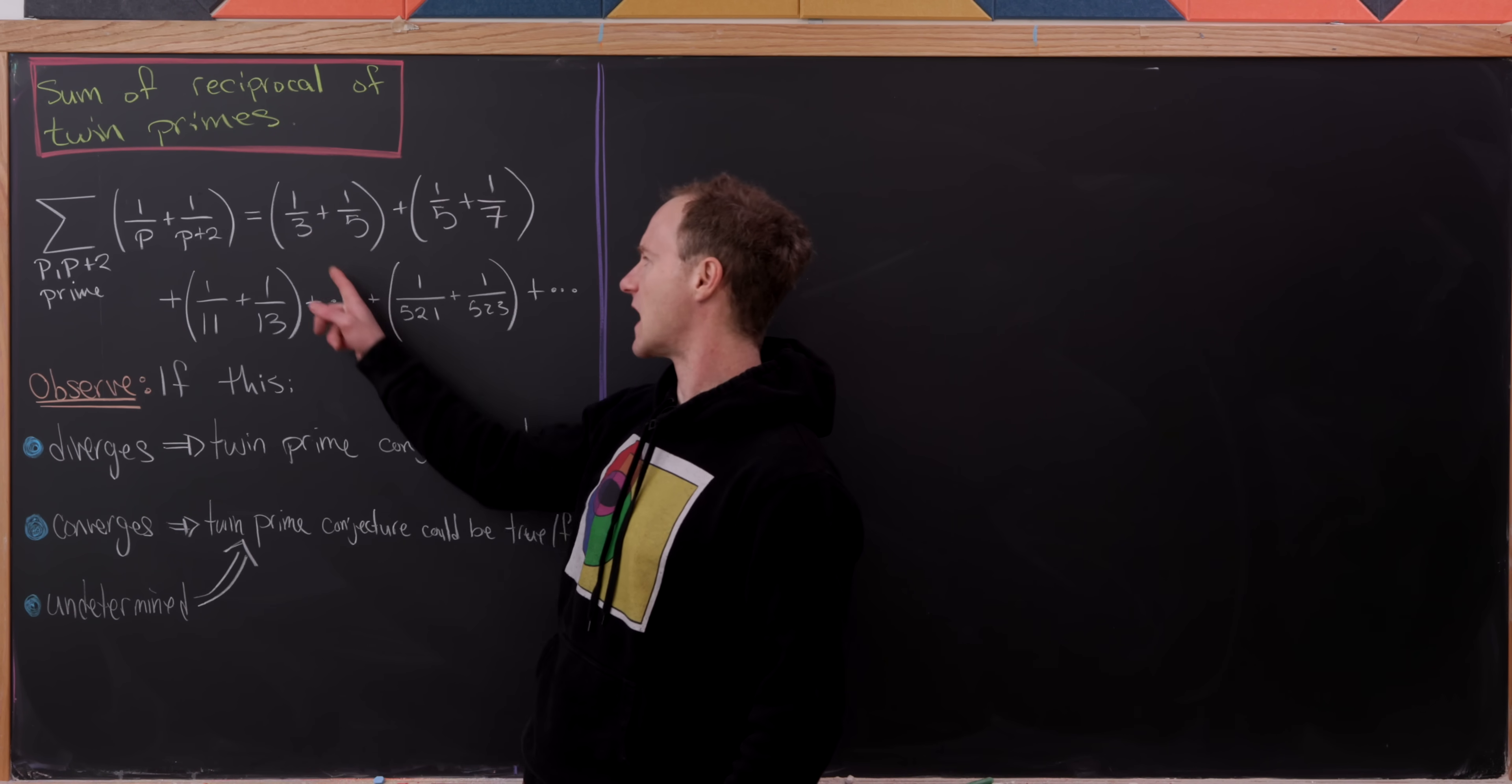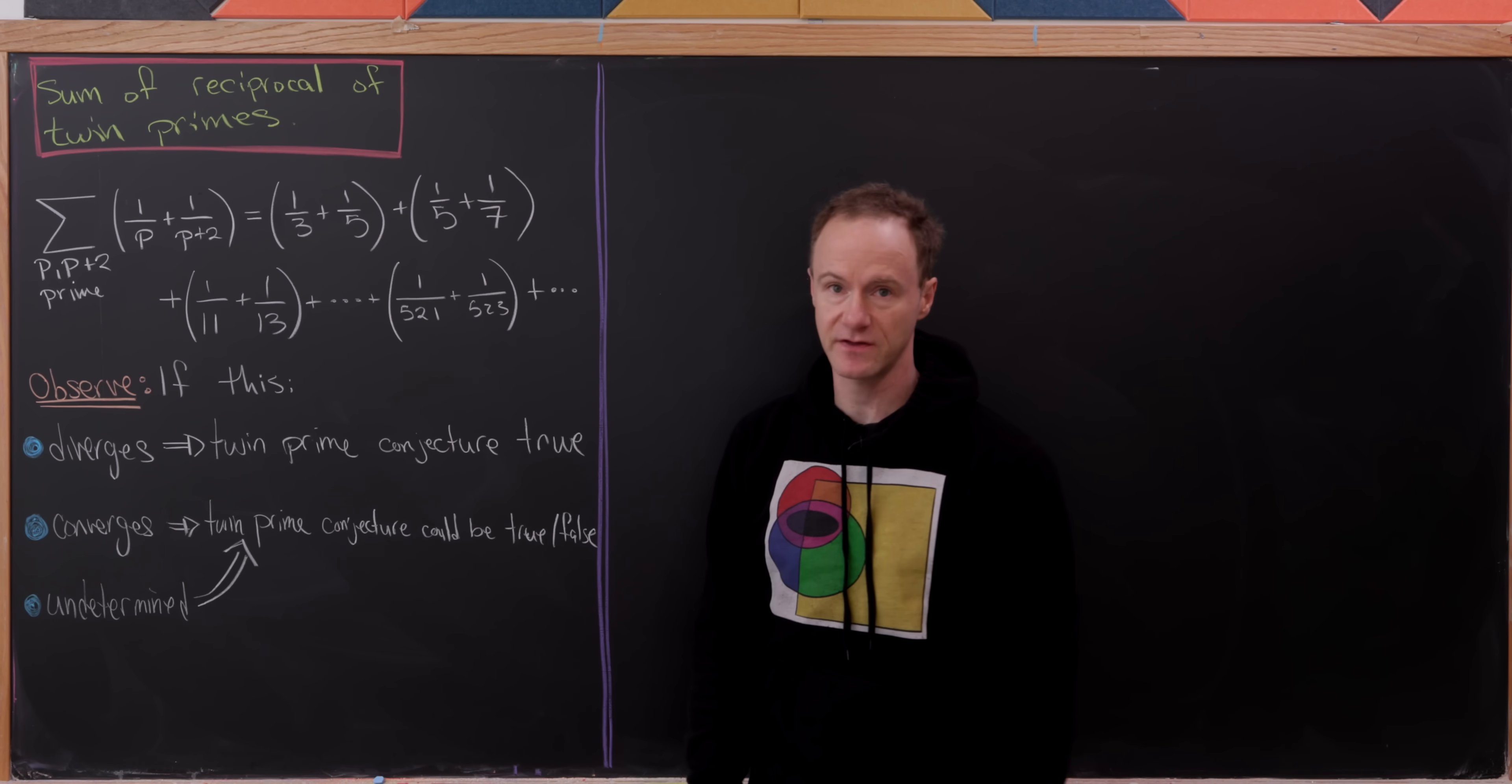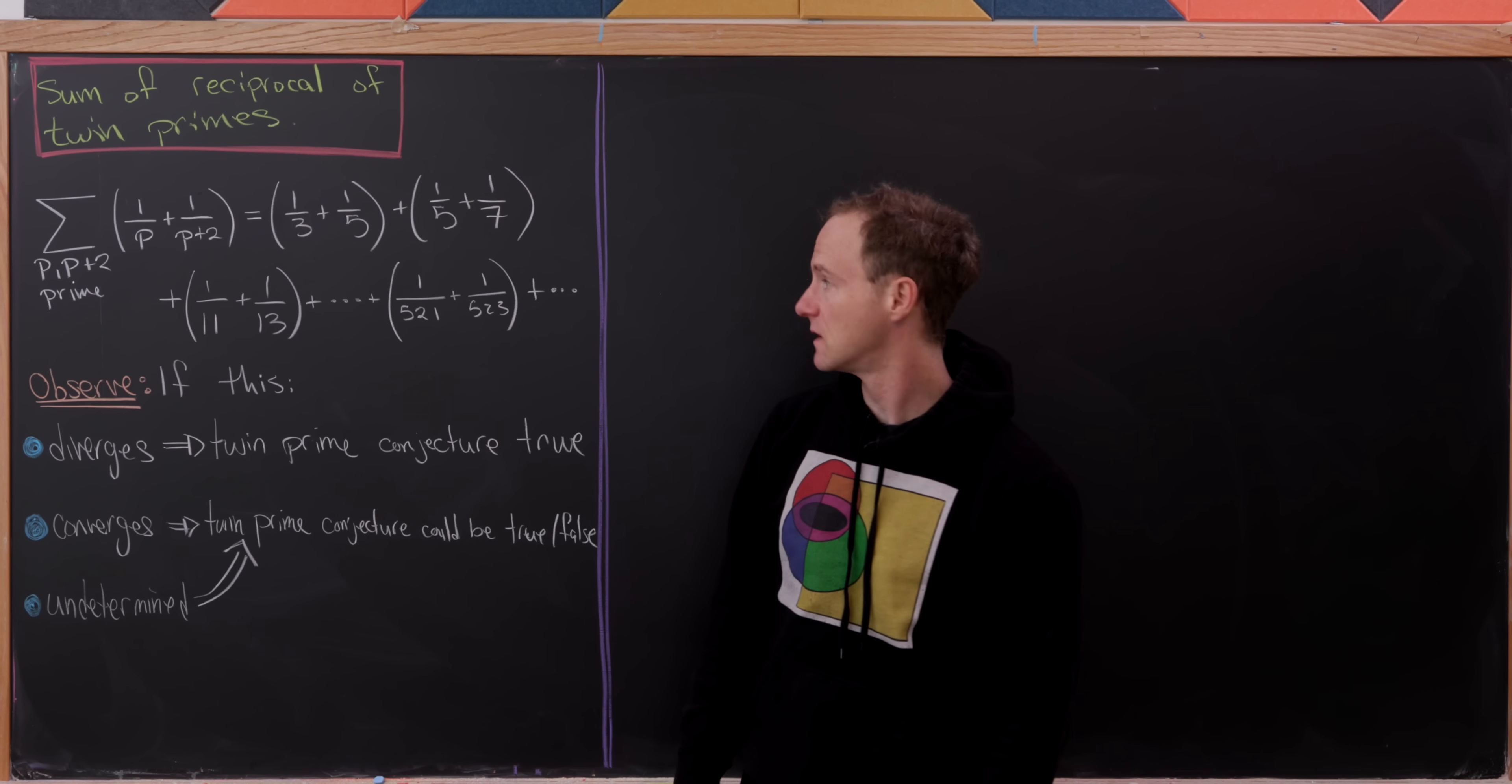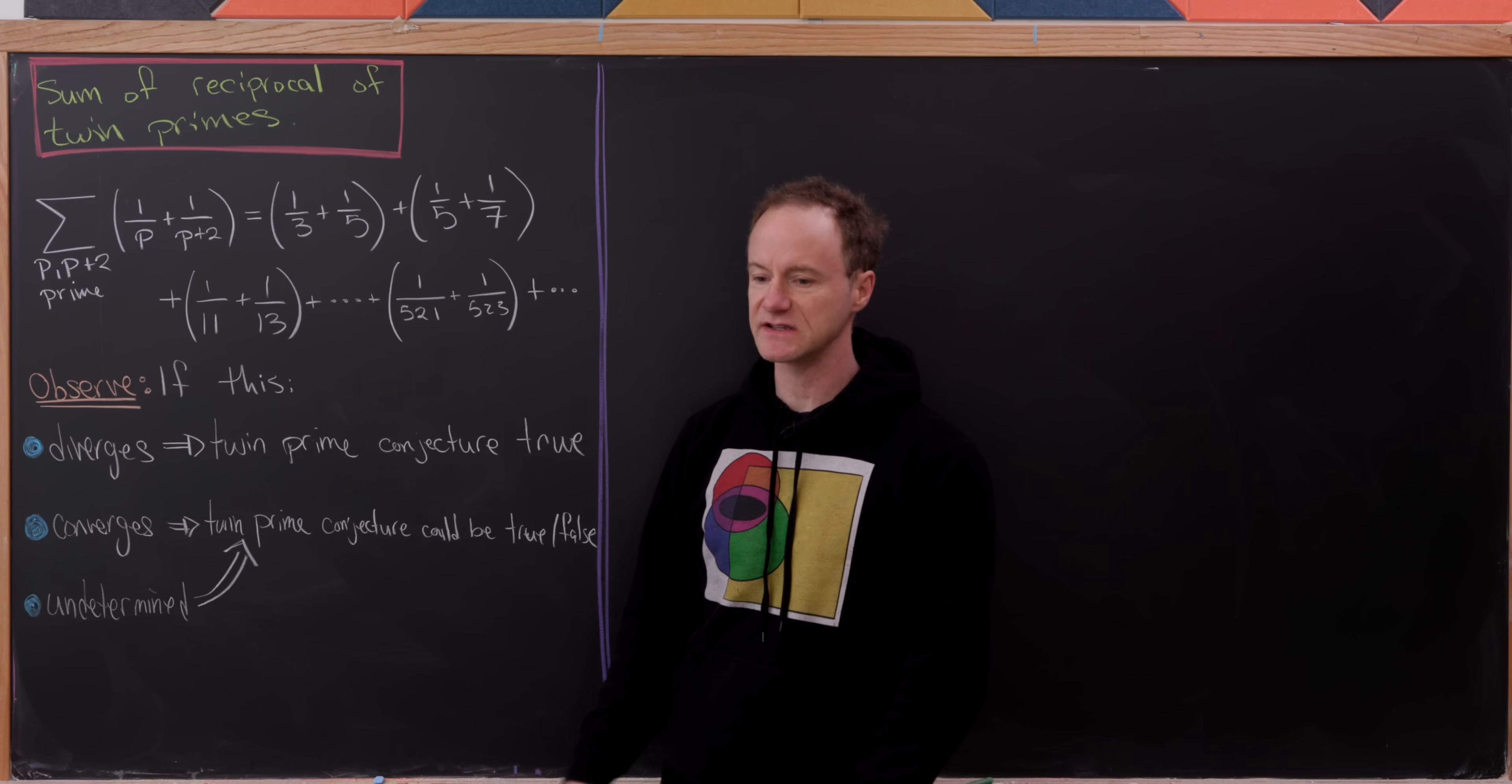To write this out, the first term which is really like two terms is 1/3 plus 1/5, and then next up we have 1/5 plus 1/7, then 1/11 plus 1/13, and then you've got a lot of things in the middle.